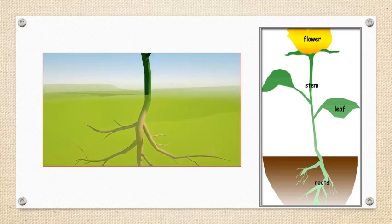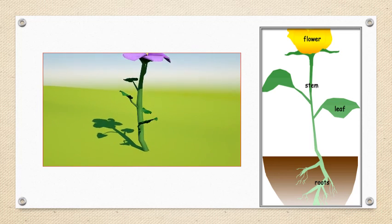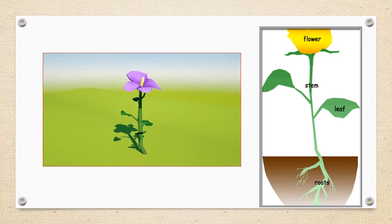The stem holds up the plant. It also brings water and food straight from the roots to the rest of the plant.